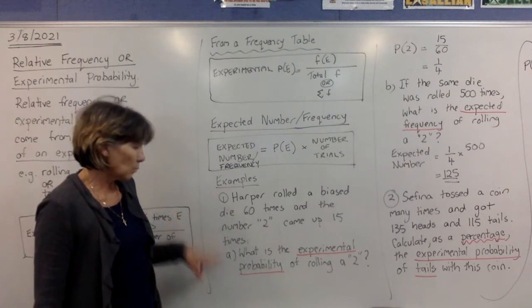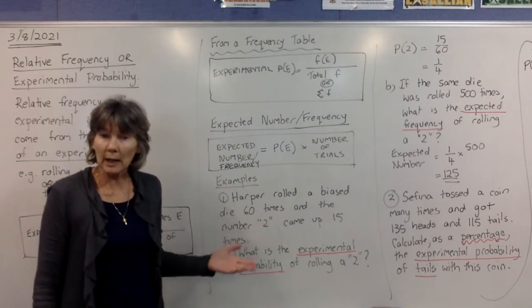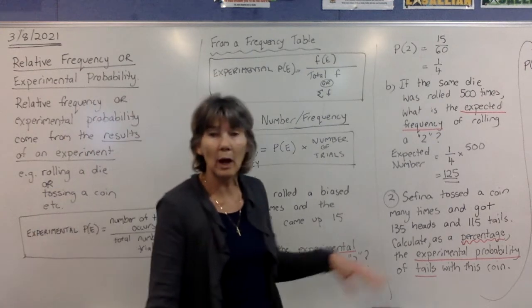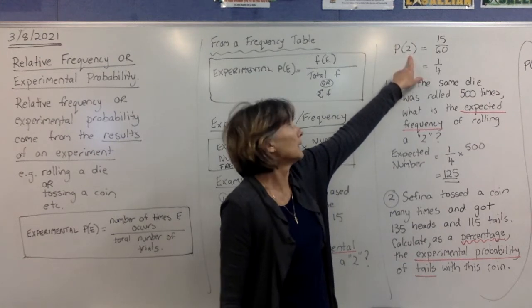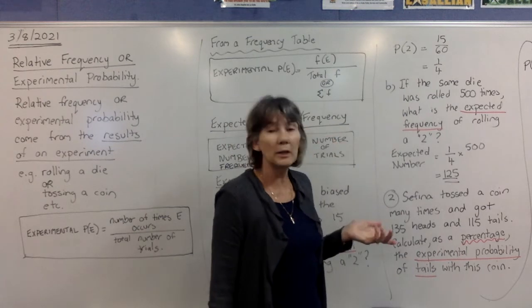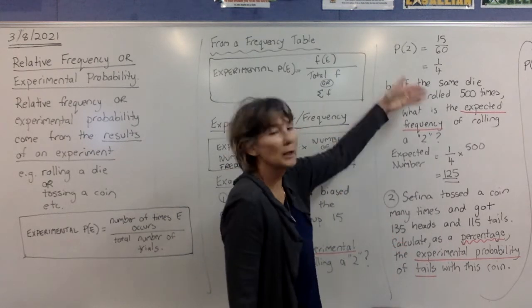So it says, what is the experimental probability of rolling a 2? Well, a 2 came up 15 times out of 60 times. So we write the probability of getting the 2, the experimental probability, is 15 out of 60. Then you put it in your fraction key on your calculator and press equals and simplify it. And you get 1 over 4.